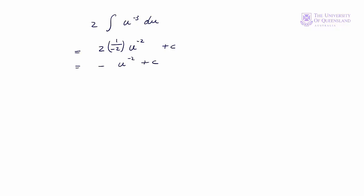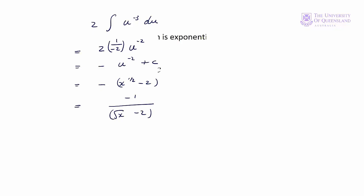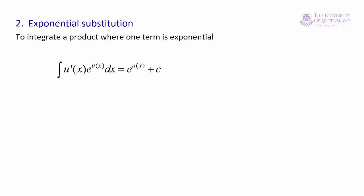Substituting back in for u, we have minus x to the one-half minus 2 to the minus 2 plus c, or in its original form, minus 1 over the square root of x minus 2, plus c. Integration by substitution when we have an exponential function as part of the product is a bit more obvious. We have the exponential function and then the first derivative of the exponent. We can see how that works with example 9.